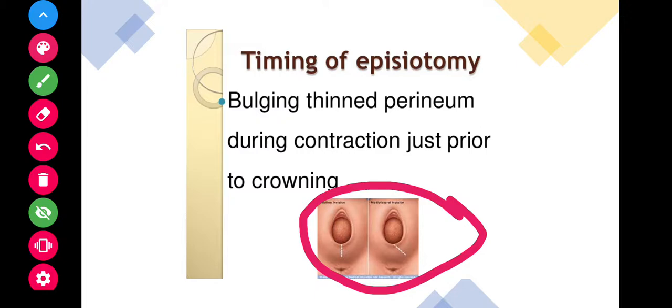We need to check whether it is a bulging thinned perineum during the contraction, just prior to the crowning. That is when 3 to 4 centimeters of head is visible, which is the ideal time.